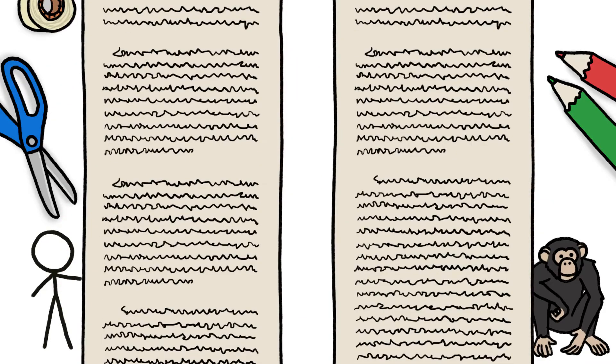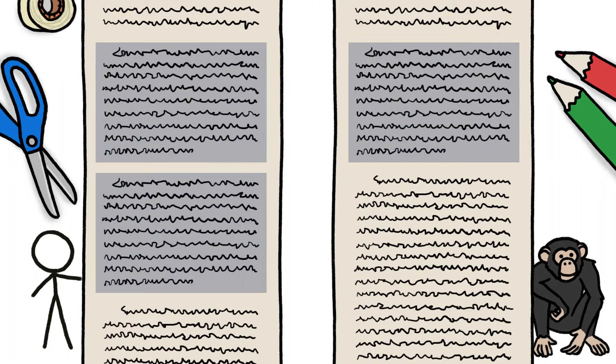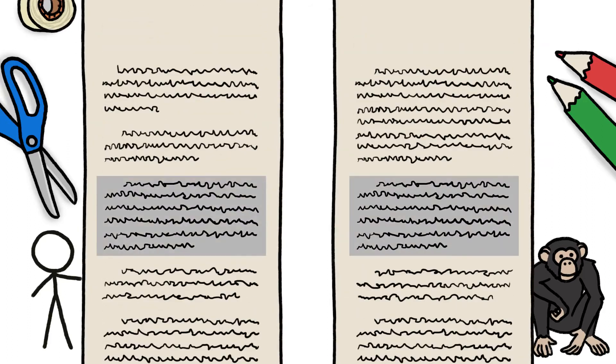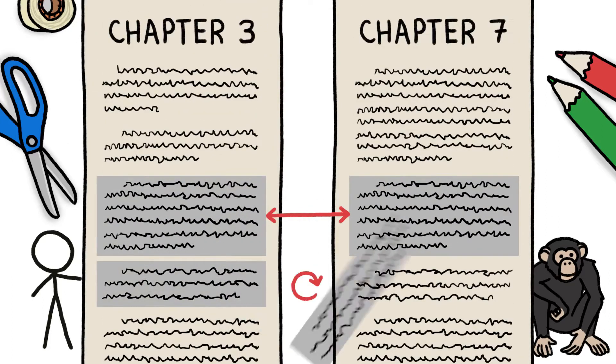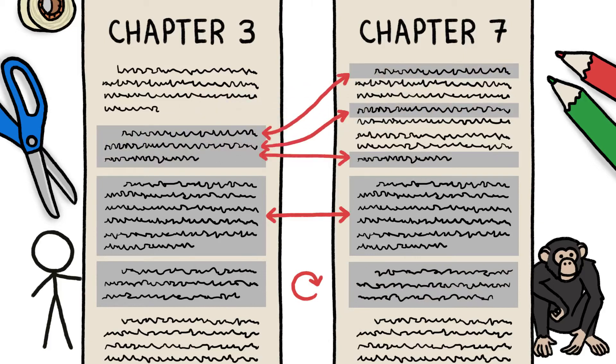For example, if a genetic paragraph thousands of letters long appears twice in a human scroll but only once in its chimp counterpart, should that second human copy count as thousands of changes, or just one? And what about identical paragraphs that appear in both genomes, but in different places, or in reverse order, or broken up into pieces?